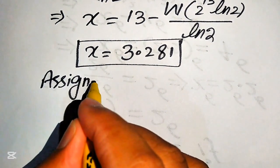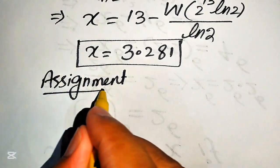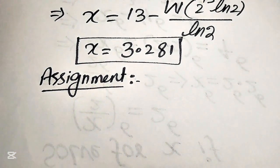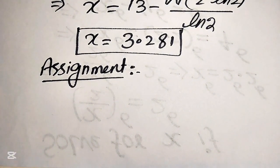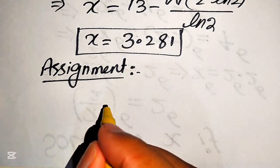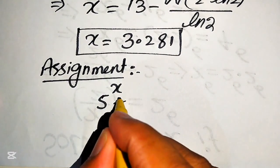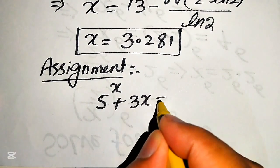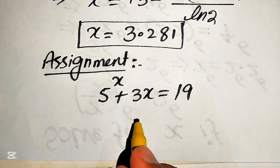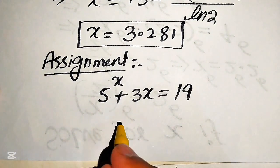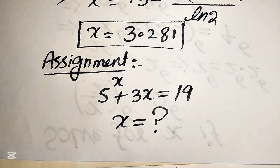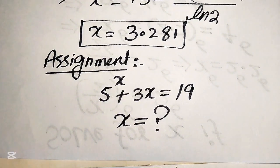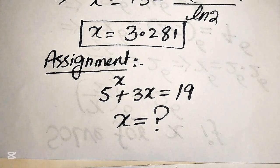At the end, here is your assignment: solve 5 to the power of x plus 3x equals 19 for the values of x. You can solve this problem by yourself and give the answer in the comment section. Thank you so much for watching — please subscribe to my channel for more exciting videos.